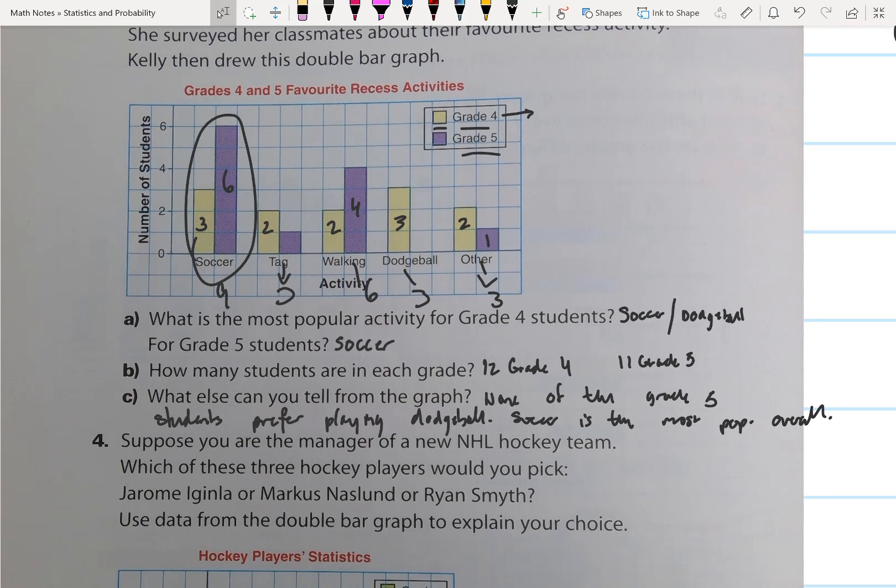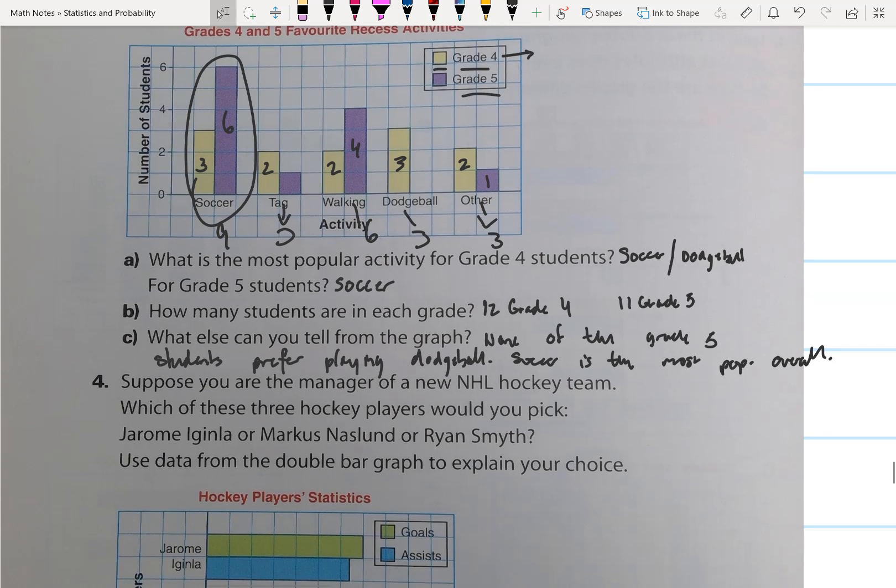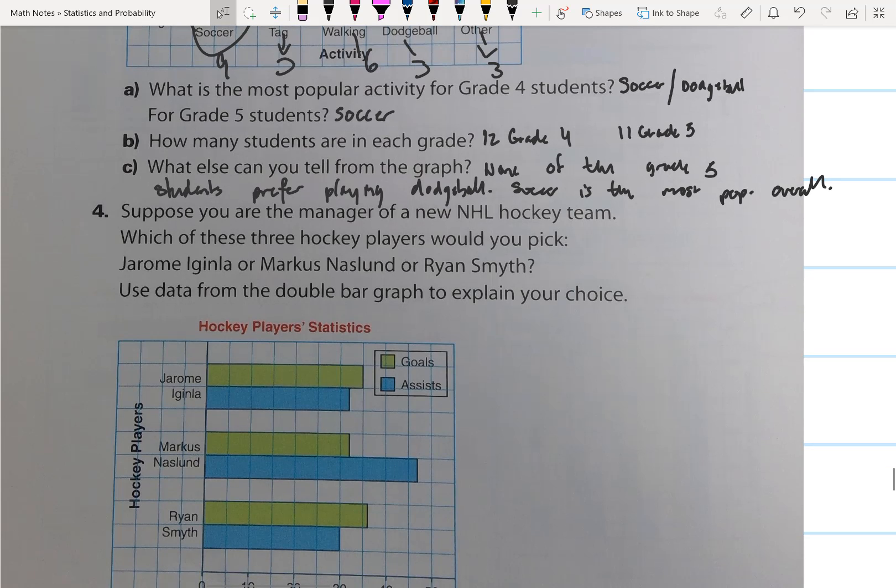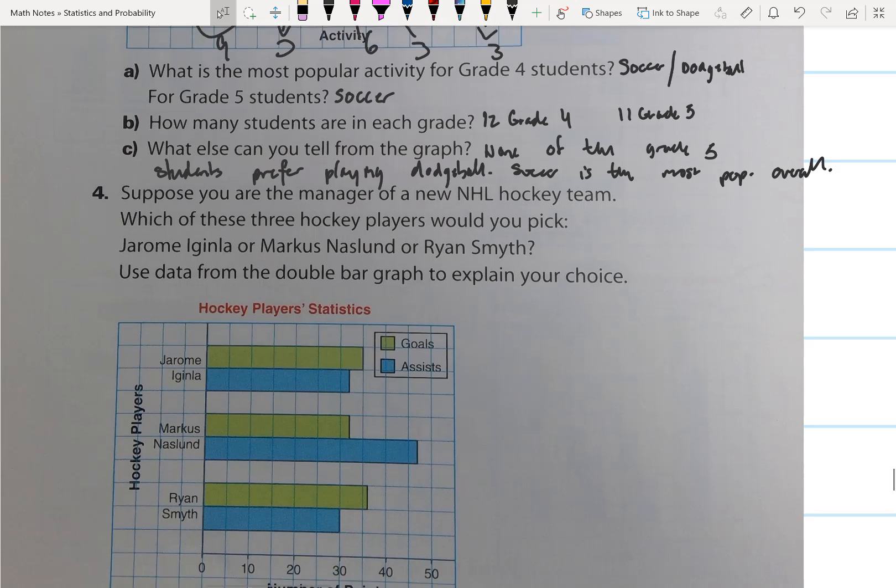Moving on to question 4. Suppose you are the manager of a new NHL hockey team. Which of these three hockey players would you pick? Jerome Iginla, Marcus Naslund, or Ryan Smith? Use the data from the double bar graph to explain your choice. Who would you choose?